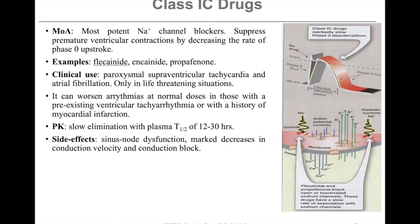Class 1c drugs are the most potent sodium channel blockers. They suppress premature ventricular contractions by decreasing the rate of the phase 0 upstroke. Examples include flecainide, encainide, and propafenone. Clinically, their uses include the treatment of paroxysmal supraventricular tachycardia and atrial fibrillation, however they are only used in life-threatening situations. They can worsen arrhythmias in those with pre-existing ventricular tachycardia or a history of myocardial infarction. The plasma half-life is between 12 and 30 hours, and side effects include sinus node dysfunction, marked decreases in conduction velocity, and in some cases conduction block.